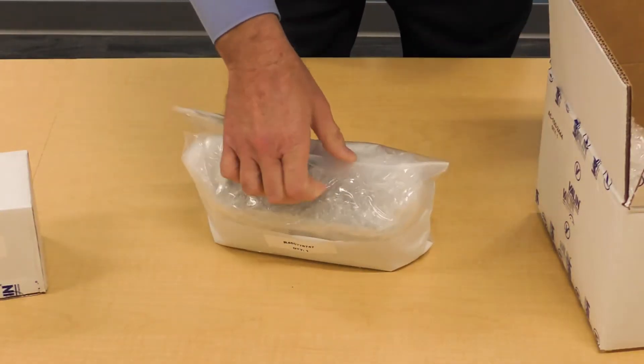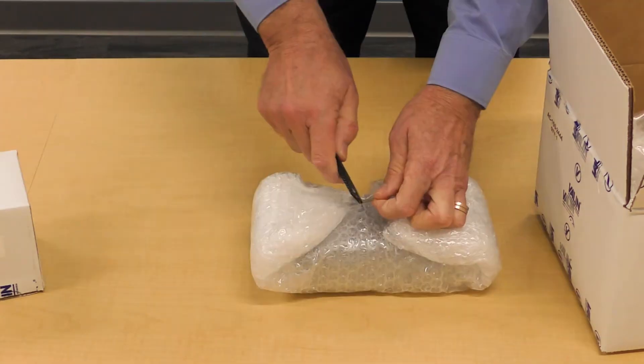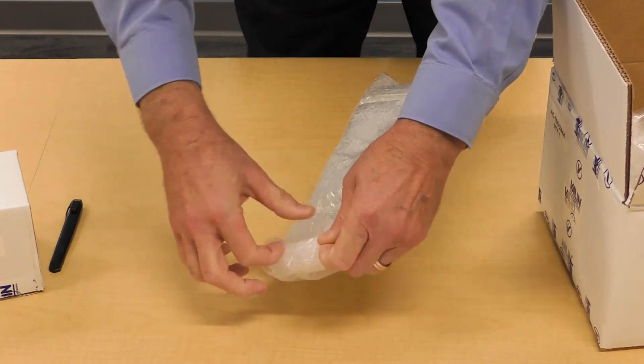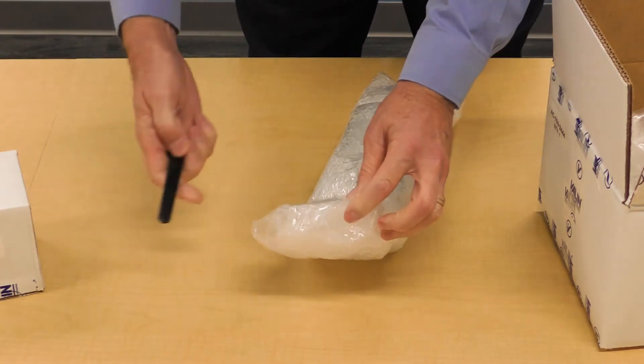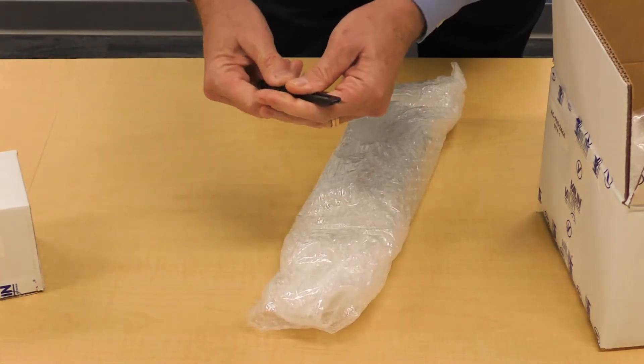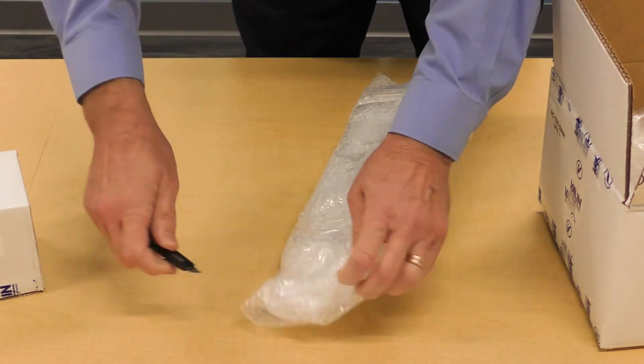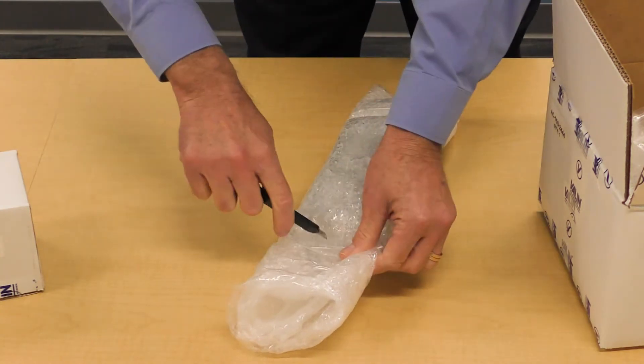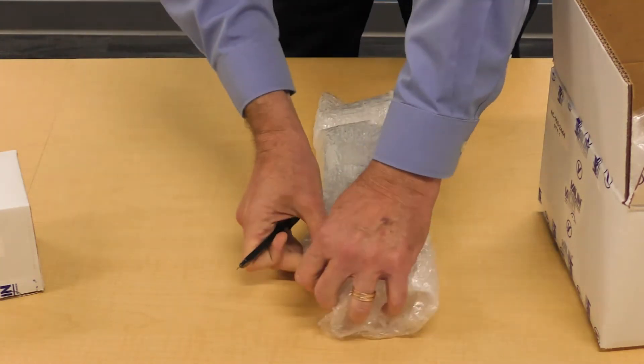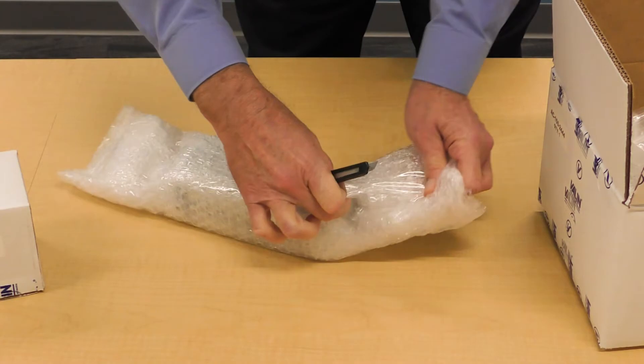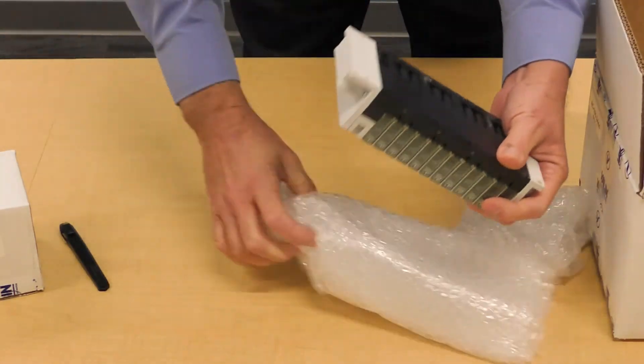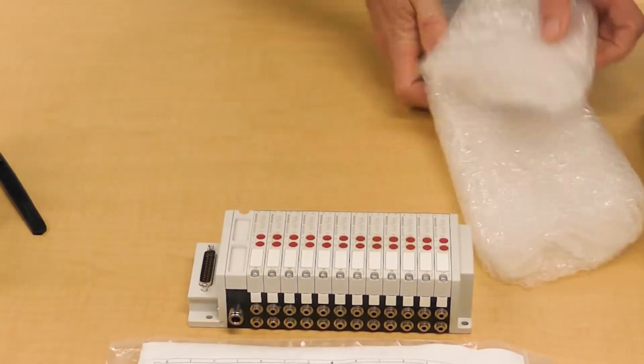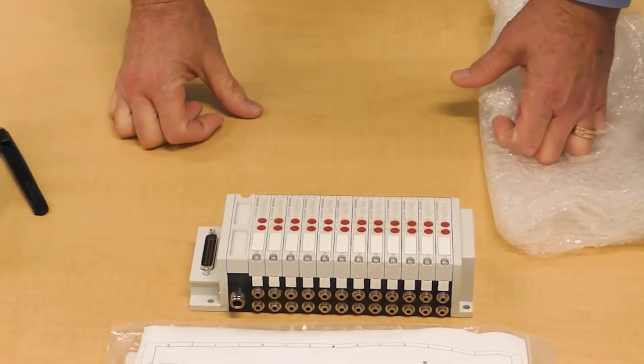Here is our manifold. This manifold is a 12 position manifold and it will mount in the same location on my tool as the existing one. It's packaged so well it might take me a little while to open it up. All right, there it is. Our brand new manifold kit.